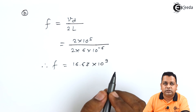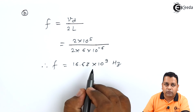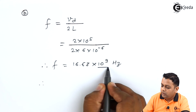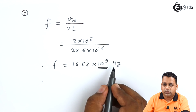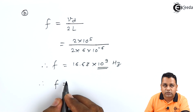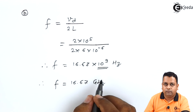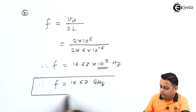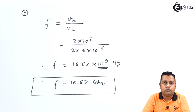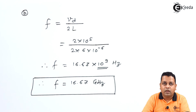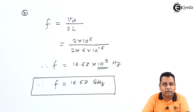Since the SI unit of frequency is hertz, absorbing 10^9 gives us the resonant frequency f = 16.67 GHz. With this, we have completed Problem 1 based on the IMPATT diode. In the next lecture we will address a second problem on the IMPATT diode. Please subscribe to the Ekeda channel for more content.